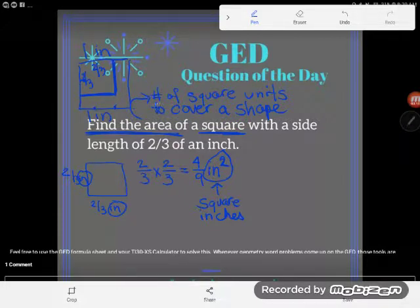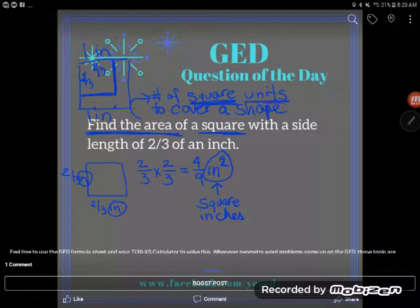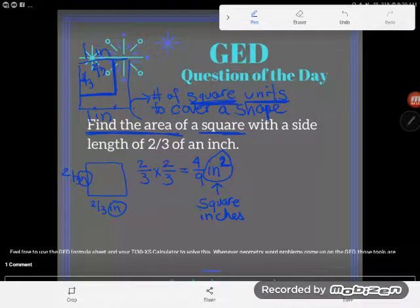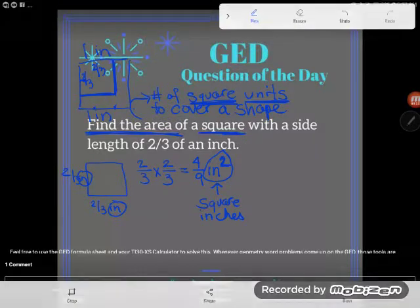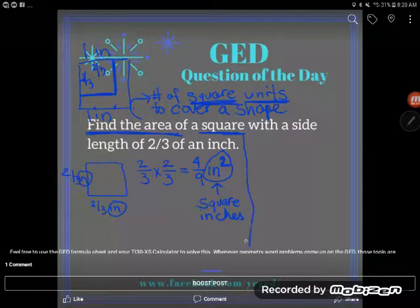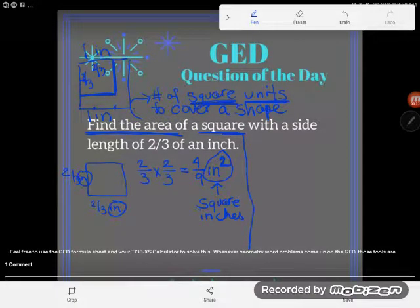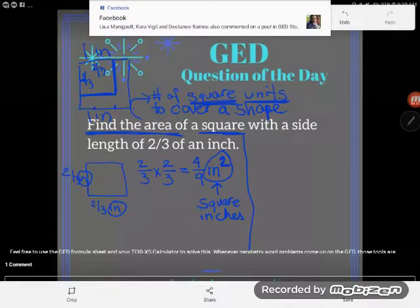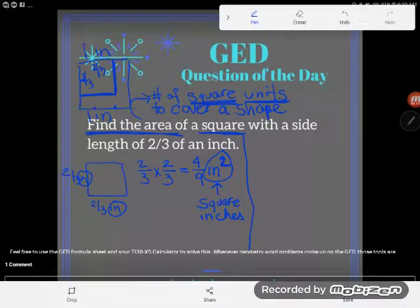And that makes sense if you think about the definition, because I said the definition was the number of square units. Area is always a square unit. Now, so that's one way to solve this problem, if you remember that wonderful trick. What if you don't remember? You're like, Kate, I don't remember how to find area, and when I take that GED test, I forget everything I ever knew. And that's fine. If that's you, go to your GED formula sheet.